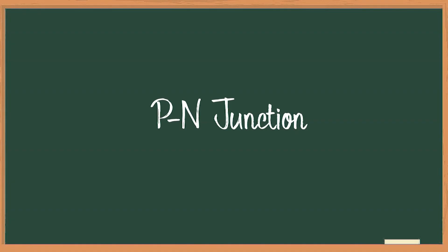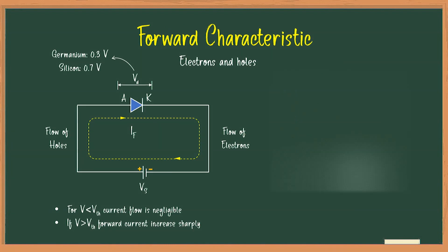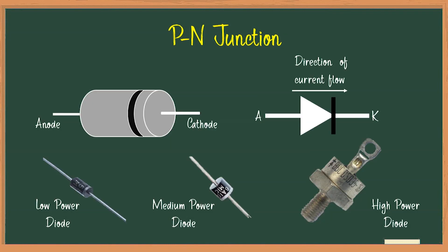In this video we are going to discuss about PN junction diode. A PN junction diode is one of the simplest semiconductor devices, which has the characteristic of passing current in only one direction. Unlike a resistor, a diode does not behave linearly with respect to the applied voltage, as a diode has an exponential current-voltage relationship, and therefore we cannot describe its operation by simply using an equation such as Ohm's law.